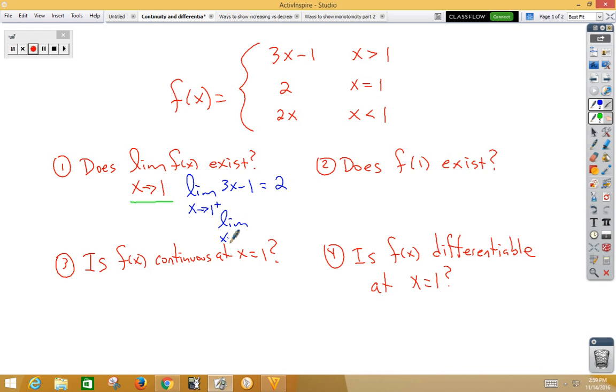The limit as x approaches 1 from the left side uses 2x, and when we plug in, we get a 2. Since we get the same value, yes, the two-sided limit does exist, because the left side limit and the right side limit are equal.